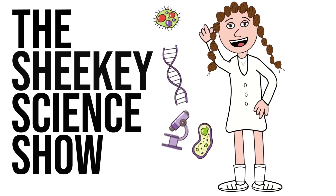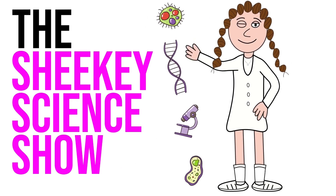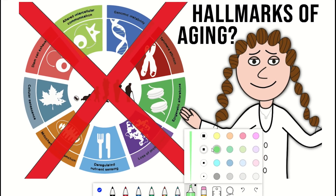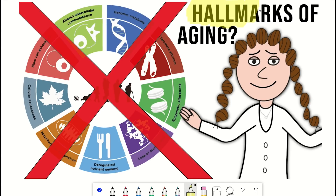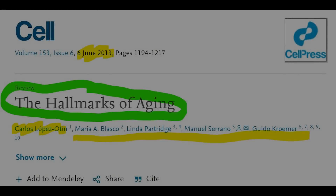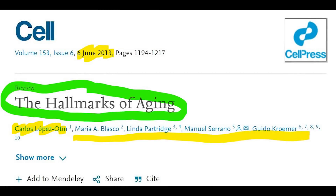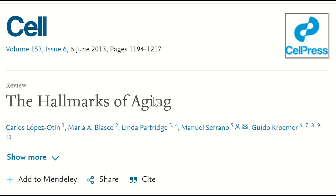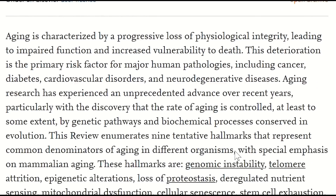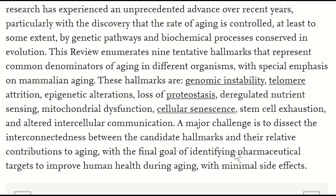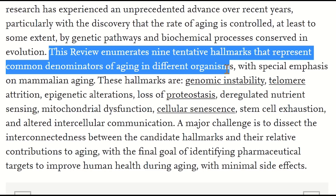Hello, and welcome to the Shiki Science Show. If you're like me, then possibly your first introduction to the field of biogerontology is the 2013 review article, The Hallmarks of Aging, by Lopez-Oten et al. This most cited review in the field of aging defines common denominators of aging in different organisms and puts them into nine different hallmarks, and it's a pretty common reference point for the field.